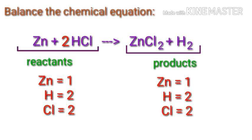The equation is now balanced. There are one zinc atom, two hydrogen atoms, and two chlorine atoms on both sides.